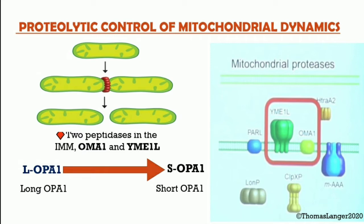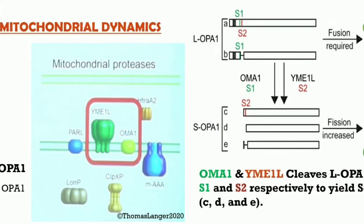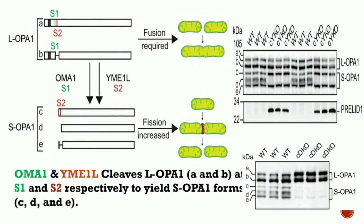Fusion and fission of mitochondria are mediated by dynamin-like GTPases acting on both the outer and inner mitochondrial membranes. OPA1 is the central player of the fusion machinery in the inner mitochondrial membrane. Mutation in this dynamin-like GTPase is the most frequent cause of inherited blindness in humans, which is how it was discovered. These two proteases, OMA1 and YME1L, were shown to cleave OPA1 at two distinct sites, converting it from long forms into short ones.